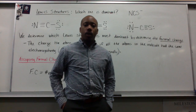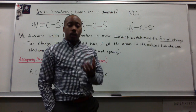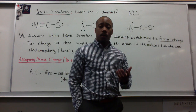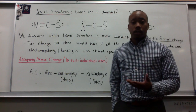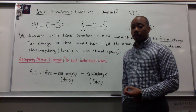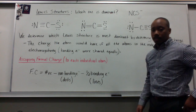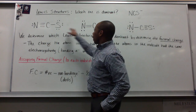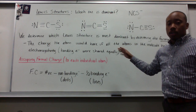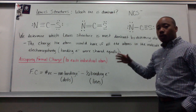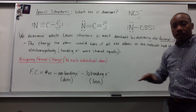Hello, gentlemen. We've been talking about Lewis structures and how to draw them, and we've seen that once we learn how to draw Lewis structures, sometimes we'll come across a substance that has multiple Lewis structures that can be drawn for that particular substance. Our example was NCS⁻. There are three different Lewis structures that can be drawn for this substance. So we have to determine which one is the most dominant.